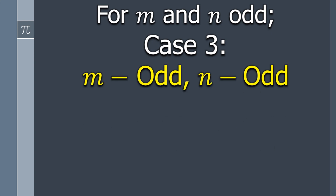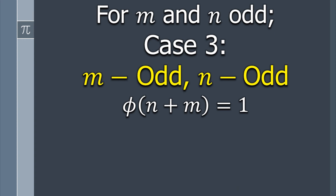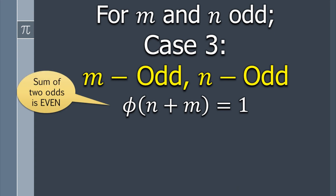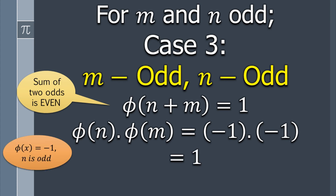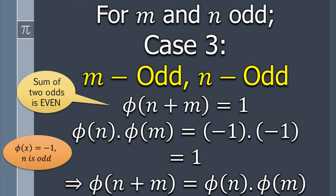For the last case, let m and n both be odd integers. Then φ(m + n) = 1, since the sum of two odd integers is even. And φ(m) × φ(n) = (−1) × (−1) = 1. Hence φ(m + n) = φ(m) × φ(n). As we have proved the homomorphism condition for all elements of ℤ, φ is a group homomorphism.